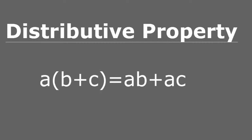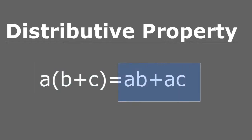The distributive property states that if I have three numbers or variables — let's call them a, b, and c — and a is being multiplied by the addition of b plus c, then I can distribute that a among the two terms that are being added, and it becomes a multiplied by b plus a multiplied by c. In this video I will show how to get from this side of the equation to the other, and we will substitute numbers to verify that both sides are equal.